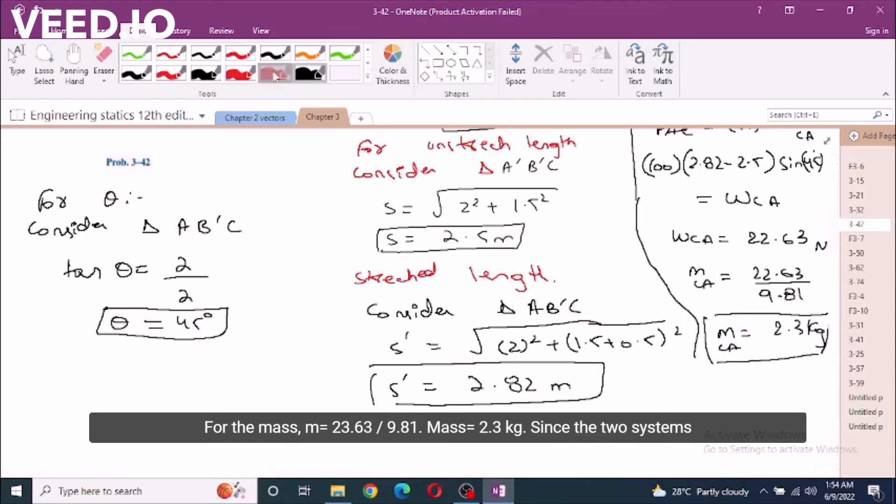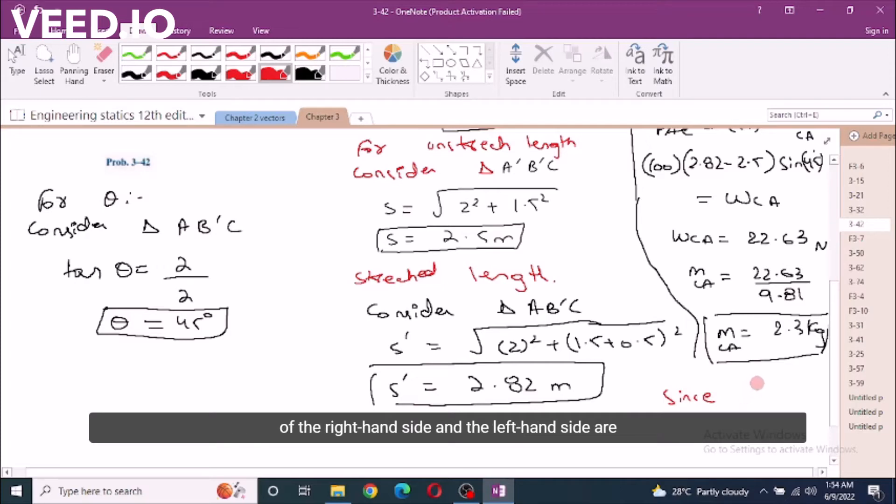Now since the two systems on the right hand side and the left hand side are identical, the masses of the cylinders and the sag are also equal for both sides. Mass of cylinder A equals mass of cylinder B equals 2.3 kg.